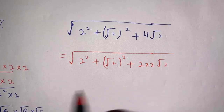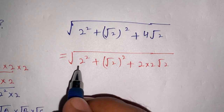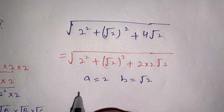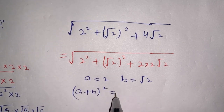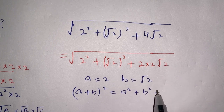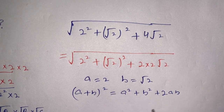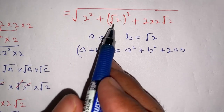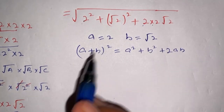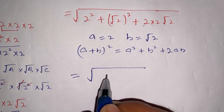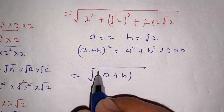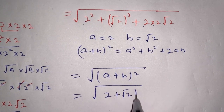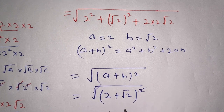Now consider a equals 2 and b equals square root of 2. We know that a plus b whole squared equals a-squared plus b-squared plus 2 times a times b. With a equals 2 and b equals square root of 2, this matches our expression. So it equals square root of a plus b whole squared.